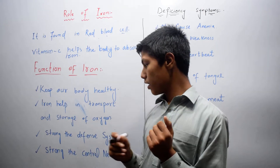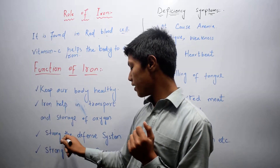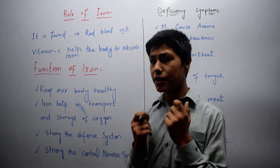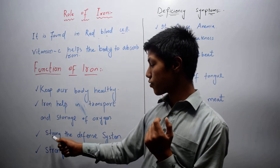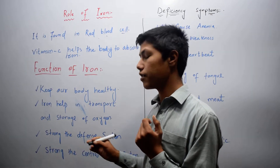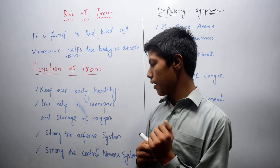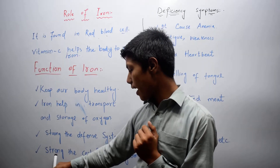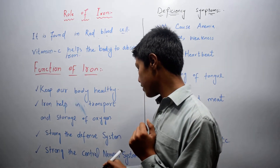The third function of iron is to strengthen the defense system. And the last one is to strengthen the central nervous system.